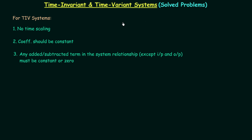In the last lecture, we solved 9 different problems based on time variancy of a system, and after solving those 9 problems, we had 3 different conditions for a system to be a time invariant system. You can see the 3 conditions on your screen. According to the first condition, there should be no time scaling in the input and also in the output. According to condition number 2, the coefficient multiplied to the input term should be constant — it should not be a function of time. And according to the third condition, any added or subtracted term in the system relationship except input and output must be constant or 0. We obtained these 3 conditions after solving the 9 problems, and to save our time, we will use the conditions directly. There is no need to follow the conventional steps.